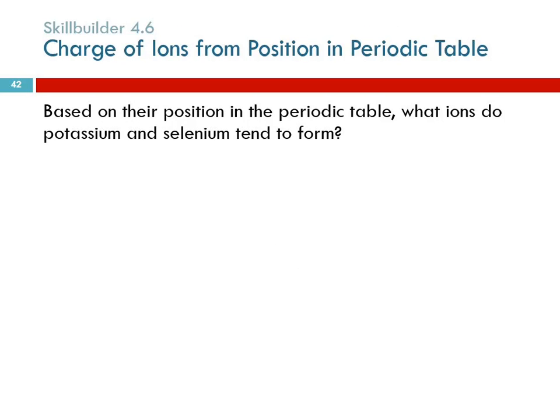Based on their positions in the periodic table what ions do potassium and selenium tend to form? Well first of all we need to know what's the element symbol for potassium? K. Where is potassium in the periodic table? What group? Group 1A. The group 1A metals form plus 1 ions. So this will be K+.